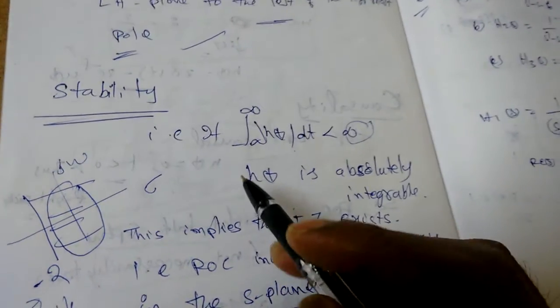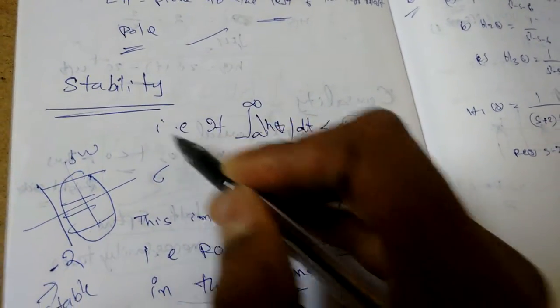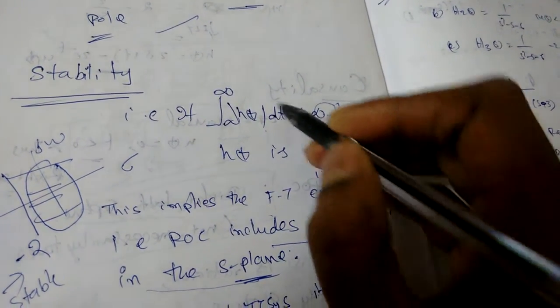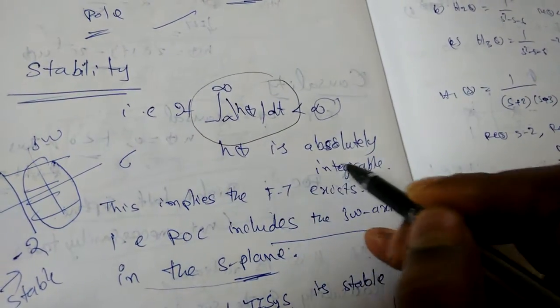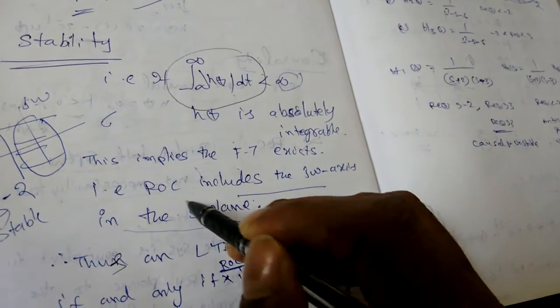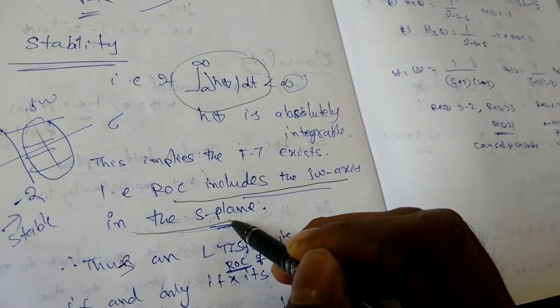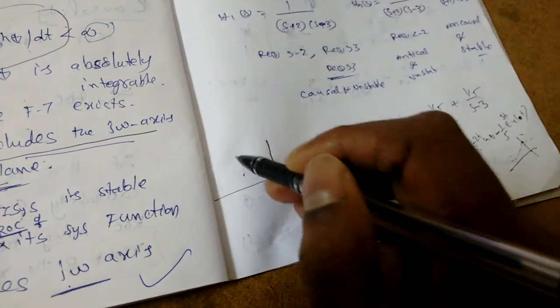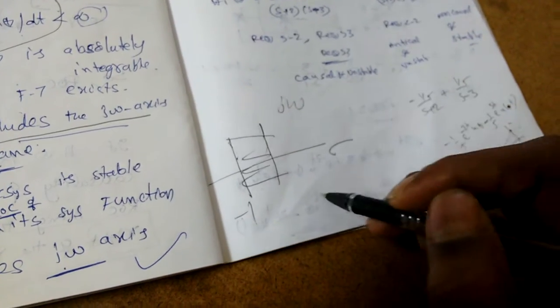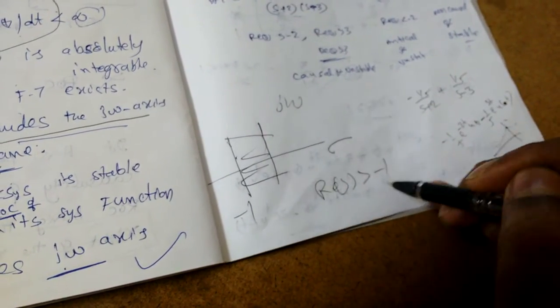In this lecture we are discussing the stability of the system. If the integral from minus infinity to infinity of |x(τ)| dτ is less than infinity — that is, if the impulse response is absolutely integrable — then the system is stable. In terms of ROC, if the ROC includes the imaginary axis in the s-plane, then the system is stable. For example, if a strip has real part of s greater than minus 1, it will include the imaginary axis, and we can say the system is stable.